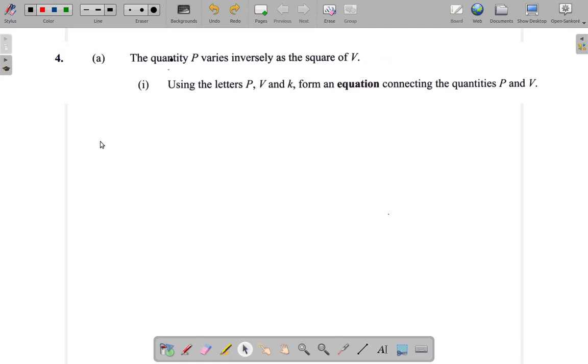Let's see. P varies inversely. P varies with V, but it says inversely, so it's 1 divided by V.